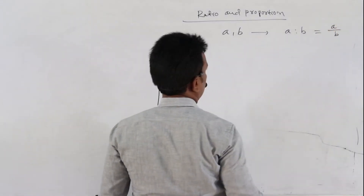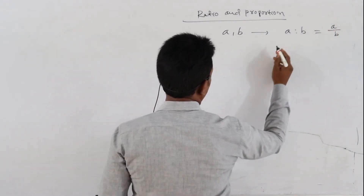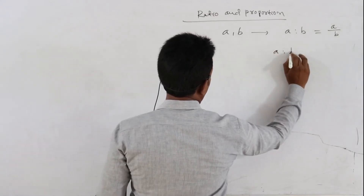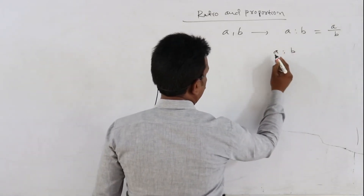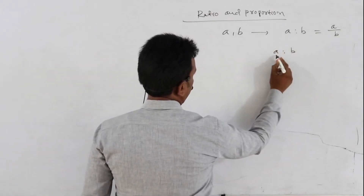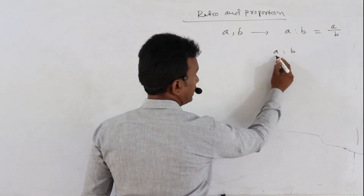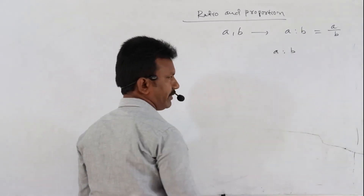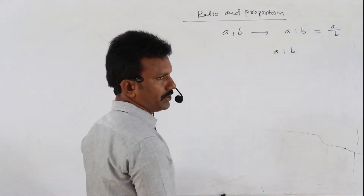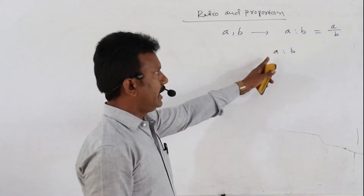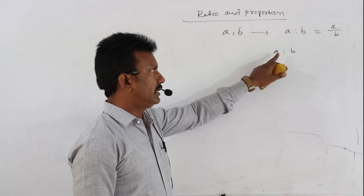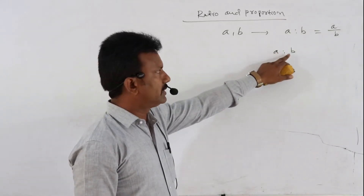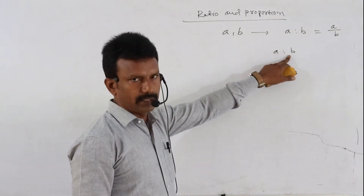Then we define the ratio between A and B as A is to B, or A by B. The first term A is called the antecedent and B is called the consequent.